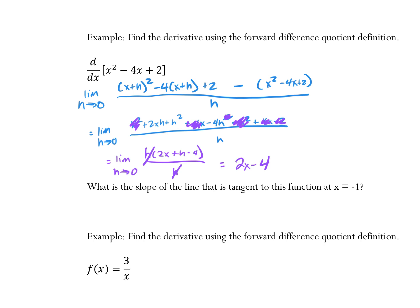At x equals negative 1, what is the slope of the tangent line? Well, we would do 2 times negative 1 minus 4, which equals negative 6.